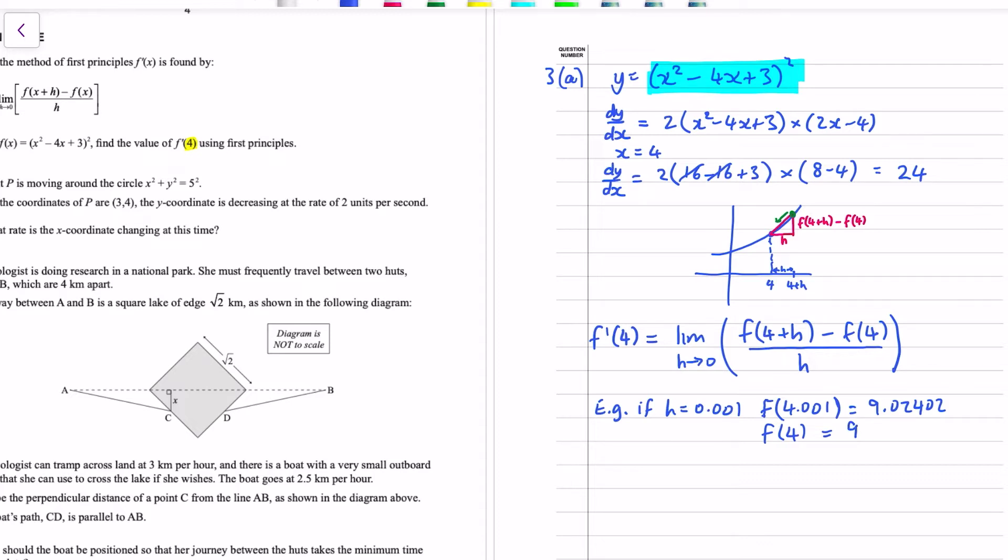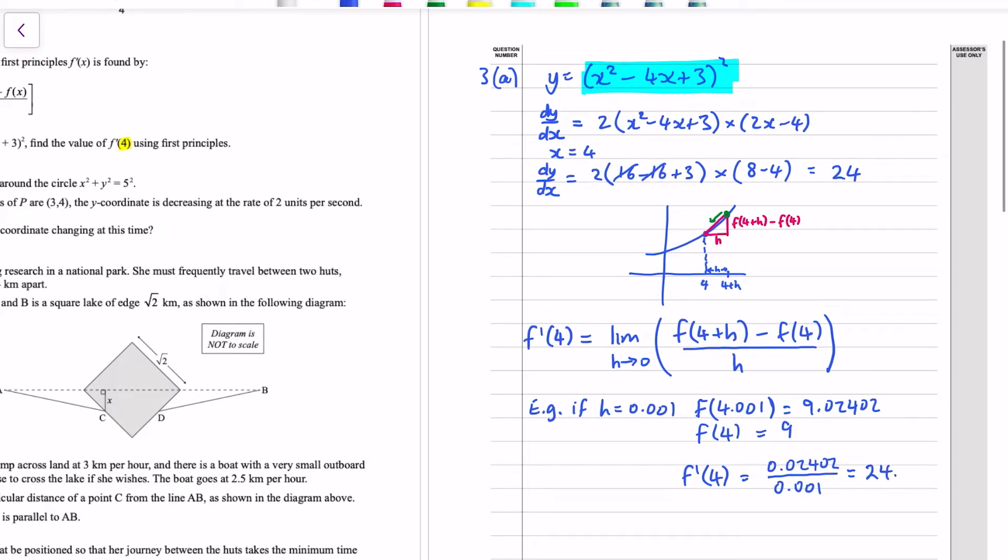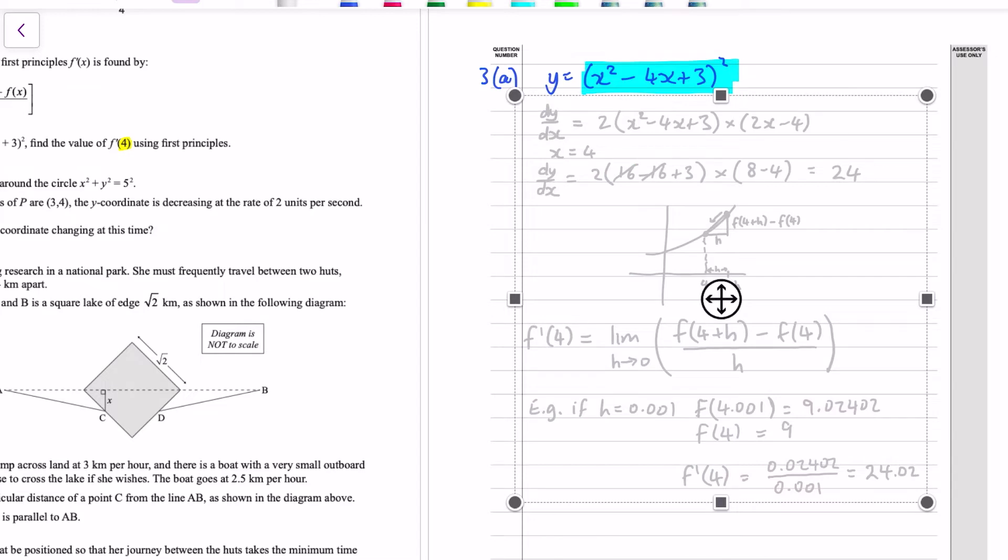And then my quotient there, my f dash of 4, is the difference between those dudes, which is the rise, 0.02402, divided by my run, which I said was h being 0.001. So if I do that, I get a smidge over 24, I get 24.02. So that's with an h value of 0.001. And of course, if I make it smaller, I'm going to get an answer that approaches 24. But that's also not sufficient, because I've used the calculator, and I've also used an approximation technique. So none of that is suitable for the actual answer to this problem.